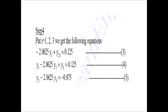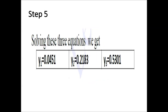Step 4: Since we need to find y1, y2, and y3 — that is i = 1, 2, and 3 — we substitute i as 1, 2, and 3 into equation 2. This gives three equations with three unknowns, which we can easily solve using the matrix method or regular substitution. After solving the three equations, we obtain the values of y1, y2, and y3. This is our solution — the procedure for solving a boundary value problem using the finite difference method.